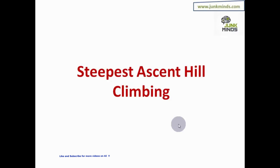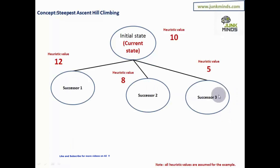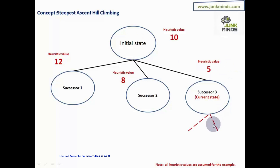Starting again from an initial state with heuristic value 10, steepest ascent hill climbing applies all rules applicable on the current state and gets all possible successors. Once all successors are obtained, it compares them all, and whichever is the best successor becomes the new current state. So rather than taking the first better successor, you evaluate all successors and pick the best.